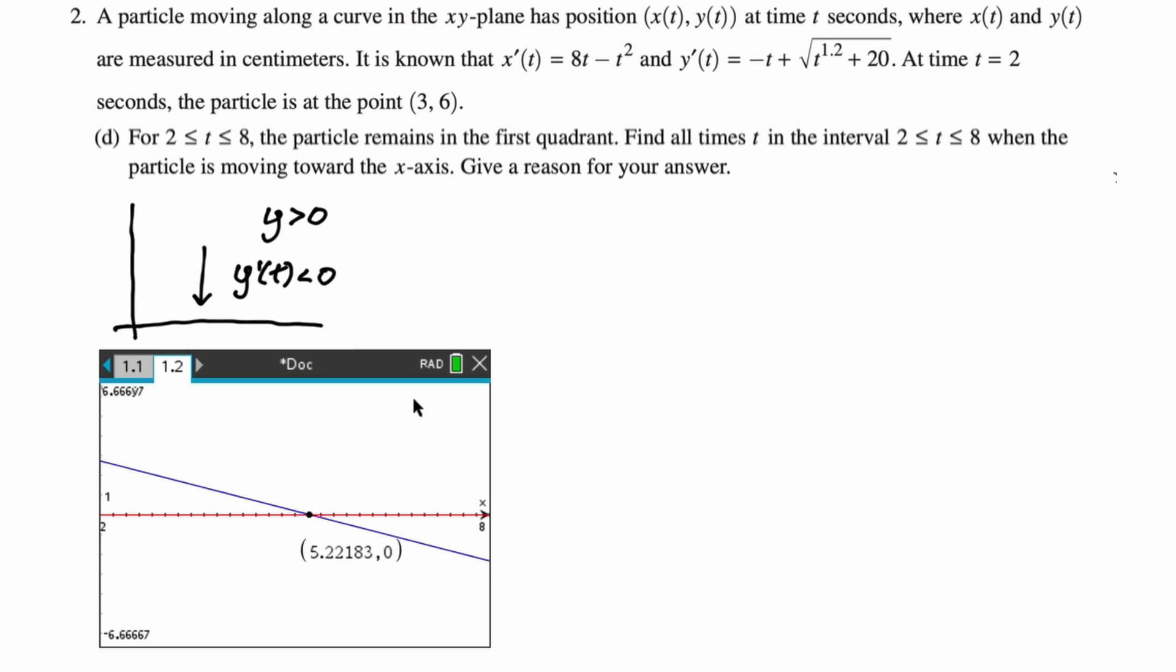I'm going to let the calculator do the work on this. I just graphed y'. Make sure you're using x there as your variable or nothing will happen. I also graphed 0, found the intersection. I can see that y' is negative between 5.222 and 8. So I'm going to say that y'(t) < 0 for 5.222 < t ≤ 8. It's definitely negative at 8, so I'm going to include that because it's included.